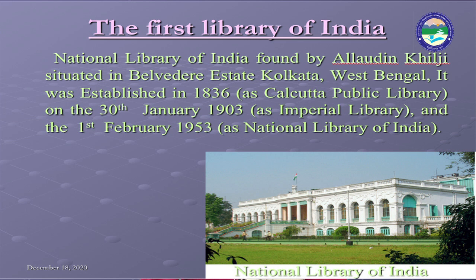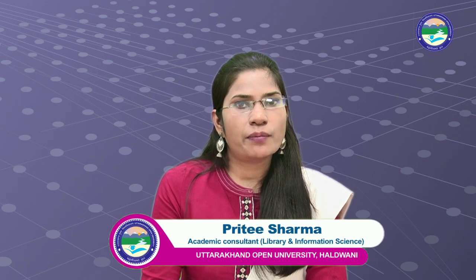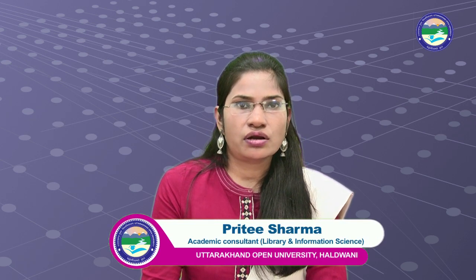The National Library of India was established in 1836. At that time it was known as the Calcutta Public Library. On 30th January 1903 it became a public library, and on 1st February 1953 it was declared the National Library of India. The first State Central Library of India is in Kerala. The State Central Library, Kerala, is one of the oldest libraries in India, established in 1829 AD, and was then known as the Trivandrum Public Library.